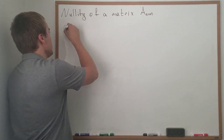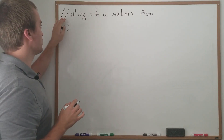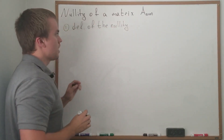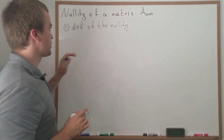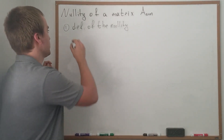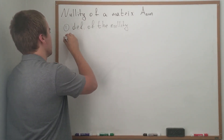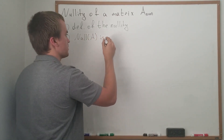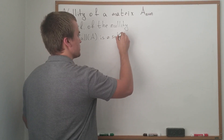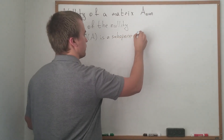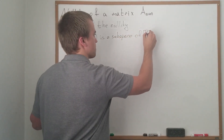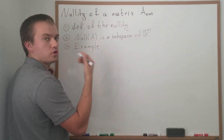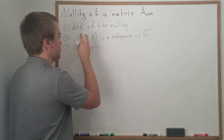In this video I want to discuss the following things. First, I want to discuss the definition of nullity, and I'm going to give you a small motivation. Second, I want to discuss that the nullity of A — or in other words the kernel — is a subspace of Rⁿ. And third, I want to give you an example where we find the actual nullity of a given matrix A.